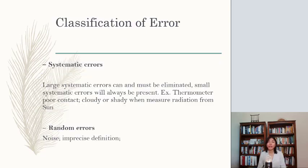And usually there are two types of errors. The first one is systematic errors. Large systematic errors can and must be eliminated. Small systematic errors will always be present. Example, thermometer poor contact, cloudy or shady when measuring radiation from the sun. Another one is random errors.